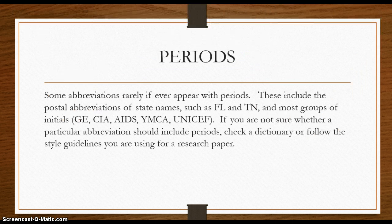Even though periods are used with many abbreviations, there are some that are never used with periods. These include postal abbreviations of state names such as FL for Florida and TN for Tennessee, and most groups of initials like GE, CIA, AIDS, YMCA, and UNICEF. If you're not sure whether a particular abbreviation needs periods, check a dictionary, or if you're doing a research paper, follow the style guidelines of your format.